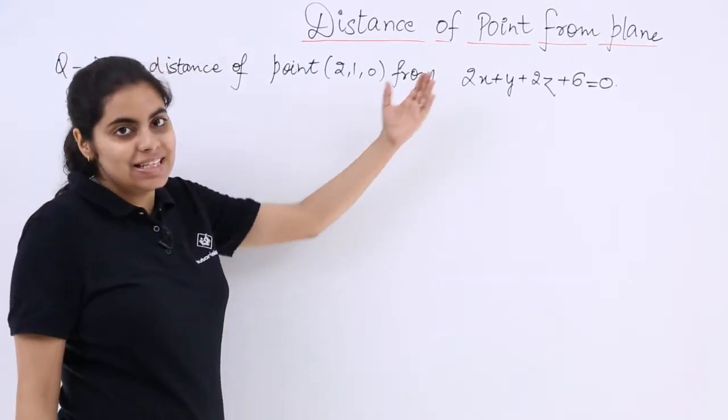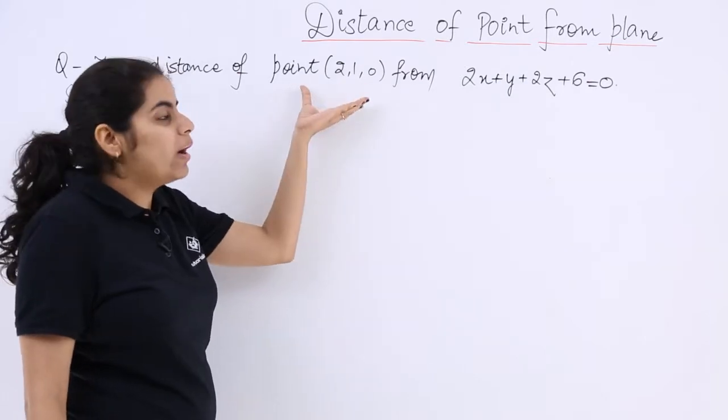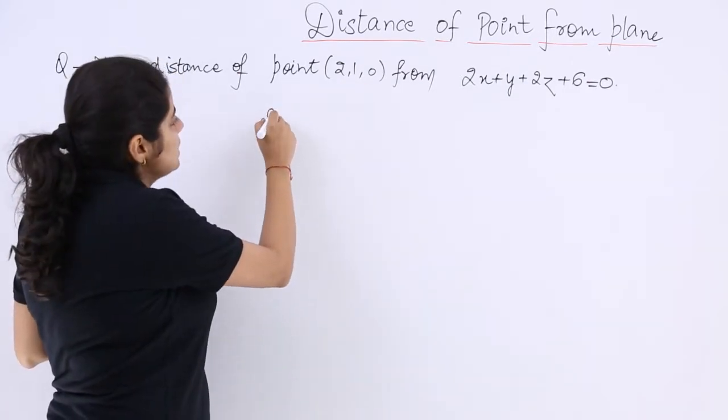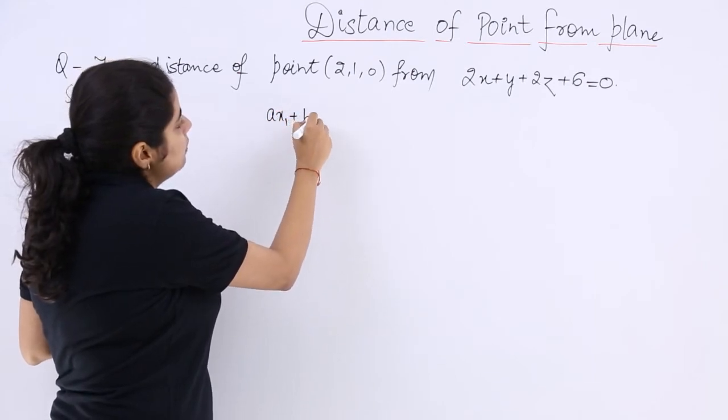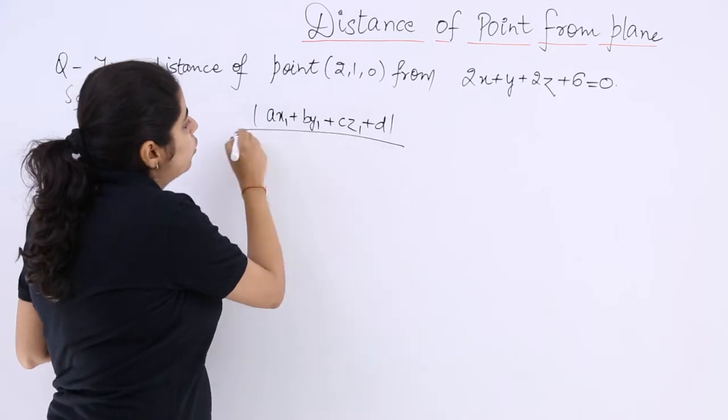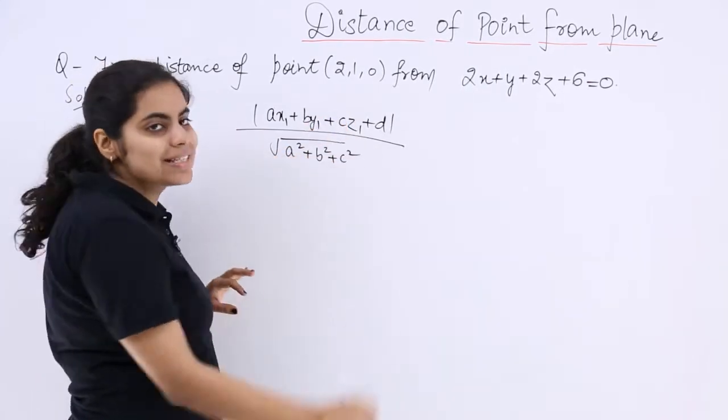If the plane has the equation ax + by + cz + d = 0 and the point is (x1, y1, z1), how to do it? We simply do it as (ax1 + by1 + cz1 + d) divided by the square root of (a² + b² + c²).